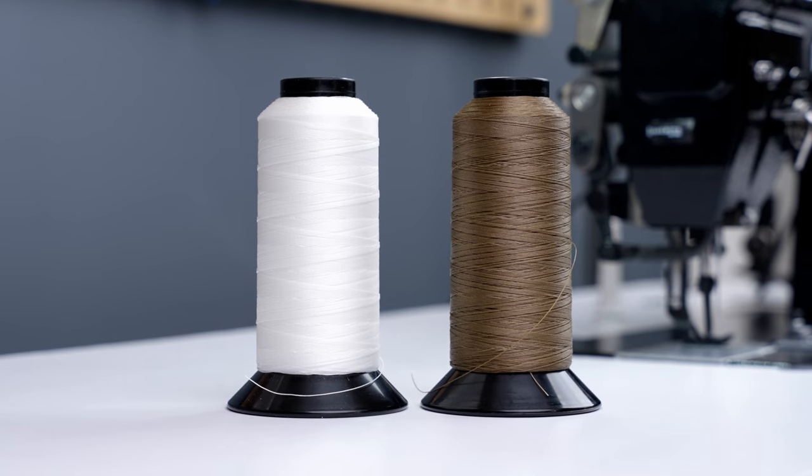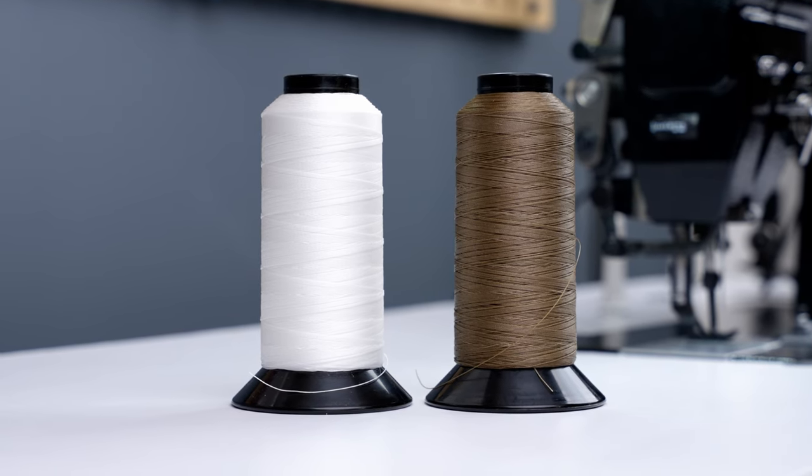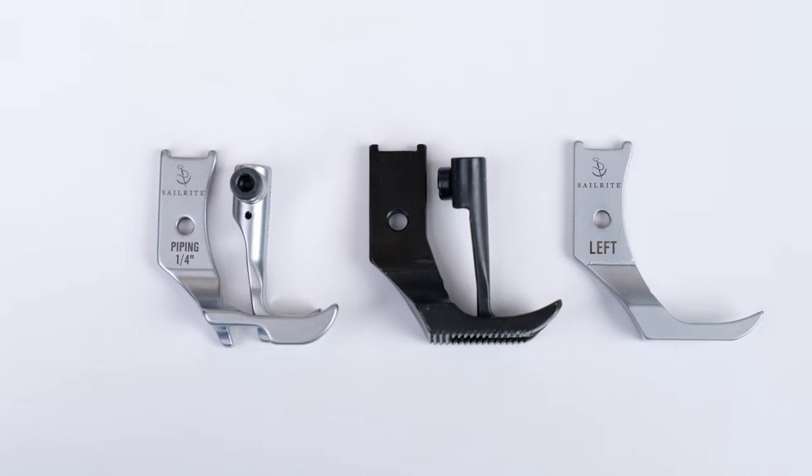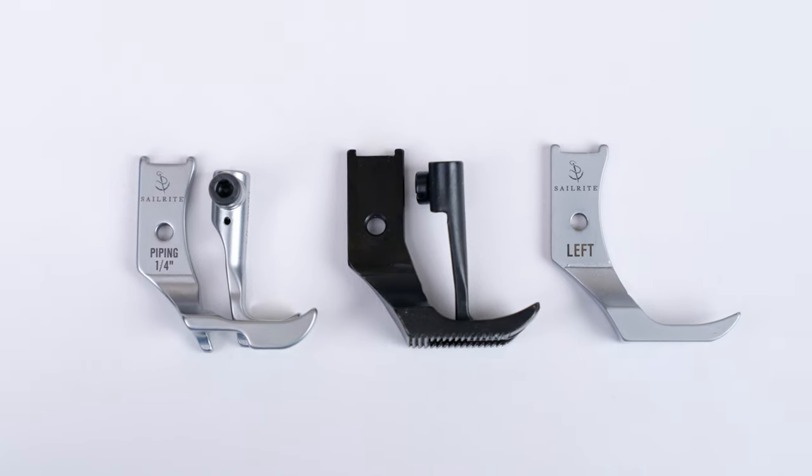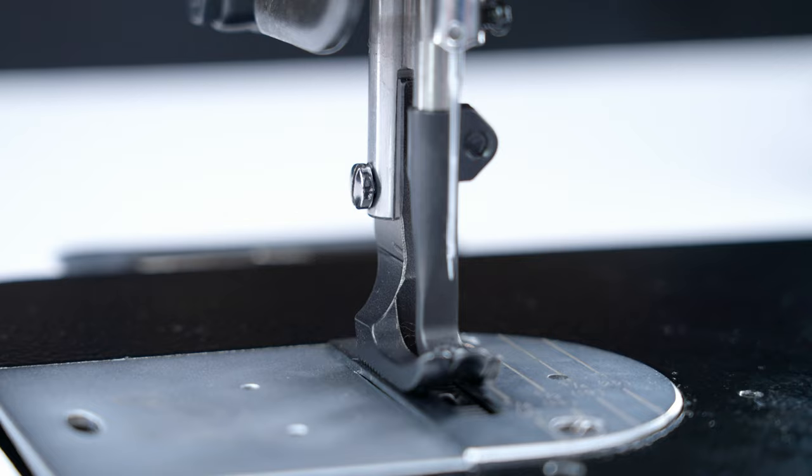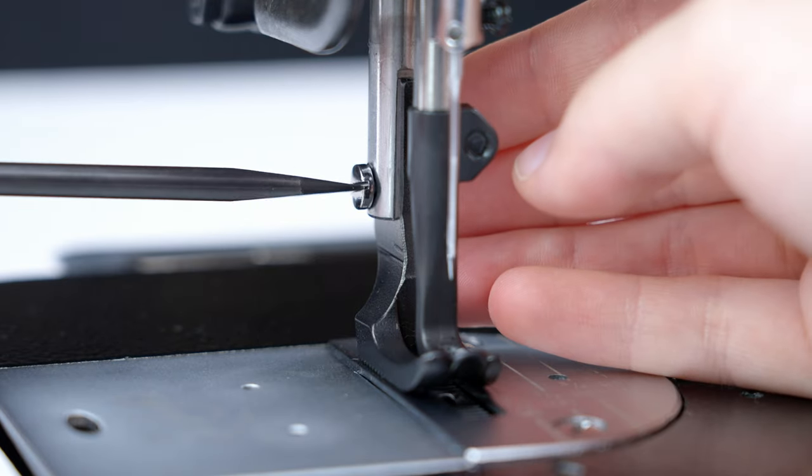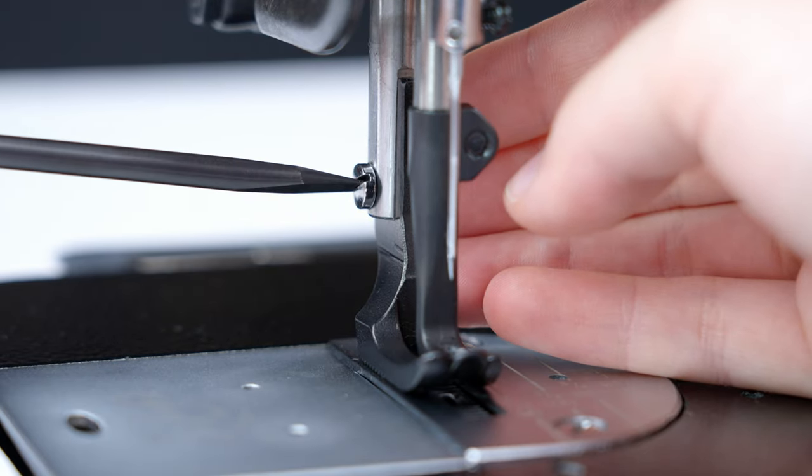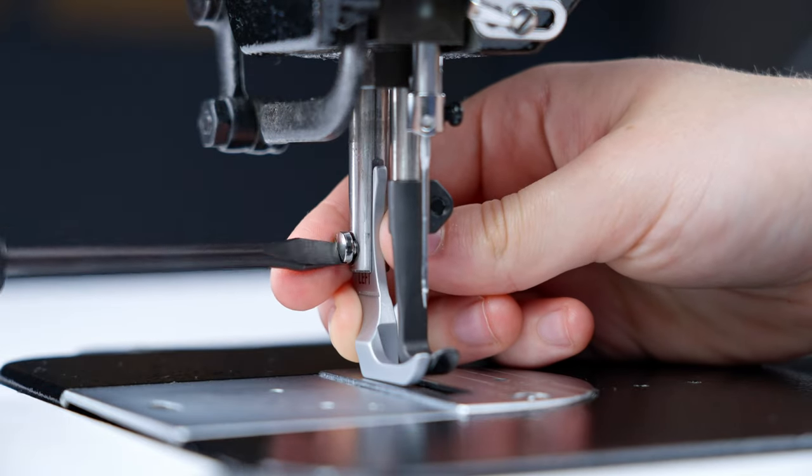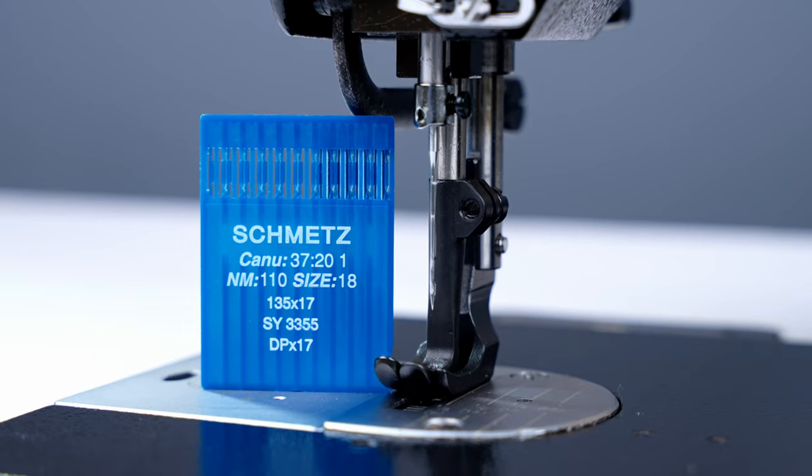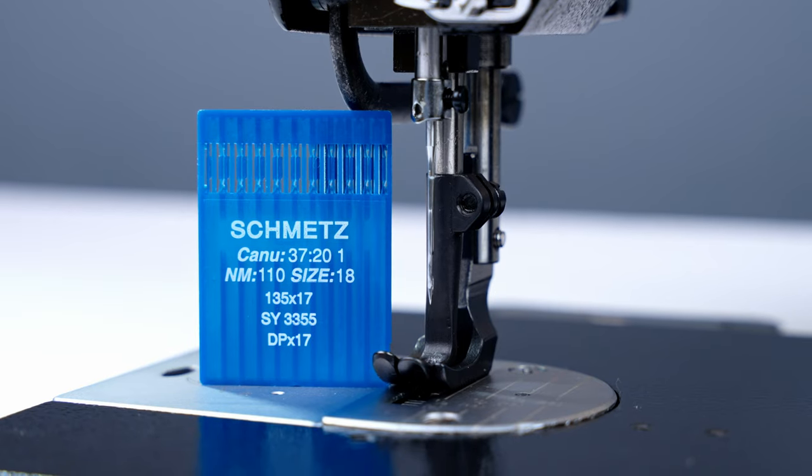For our sewing machine setup, we're going to be using white and beige V69 thread. We're also going to need the one-fourth inch piping foot, the saw tooth foot set, and the left zipper foot. We're going to be switching between our presser feet and thread colors a few times during this project, but we'll make sure to have a call out on the screen when we do so, so that you can follow along. And then for our needle, we're going to be using a number 18 round point needle.